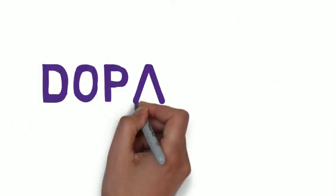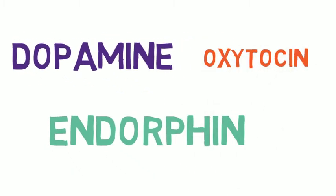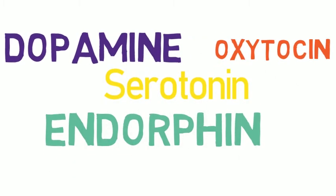These chemicals are dopamine, endorphin, oxytocin, serotonin, and cortisol.